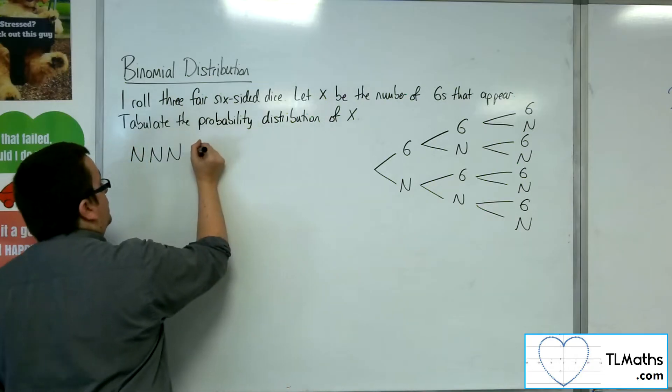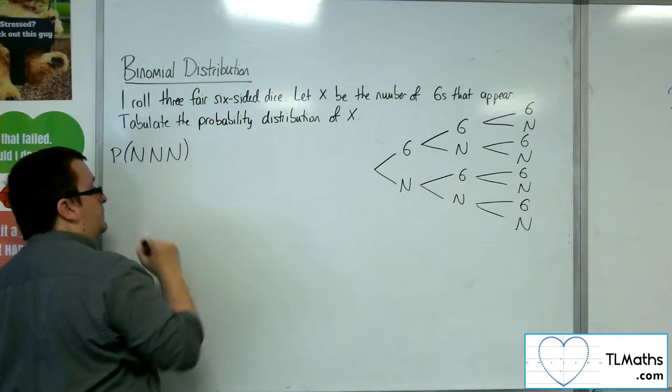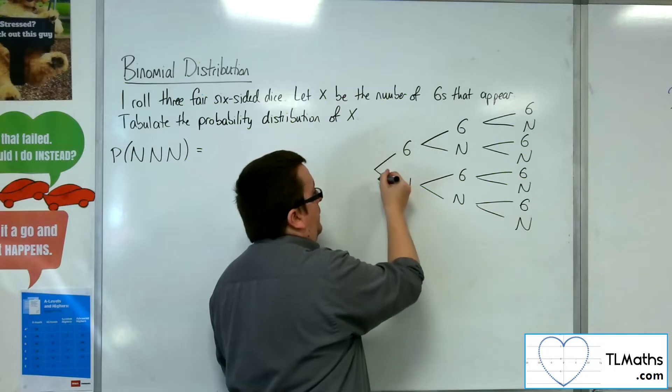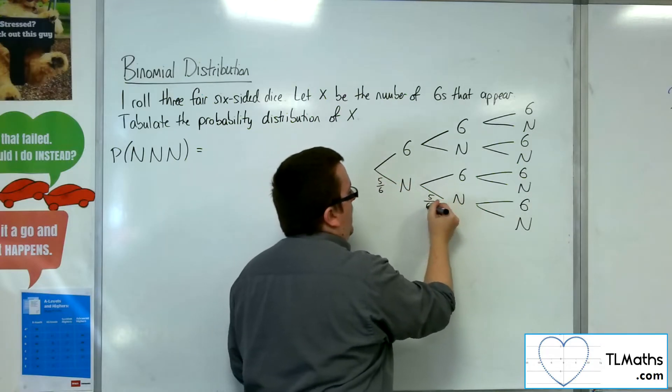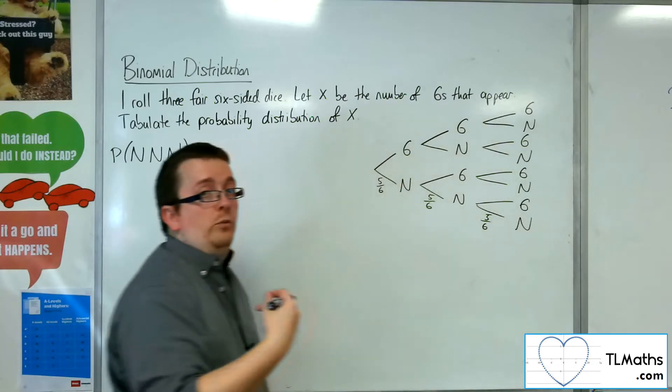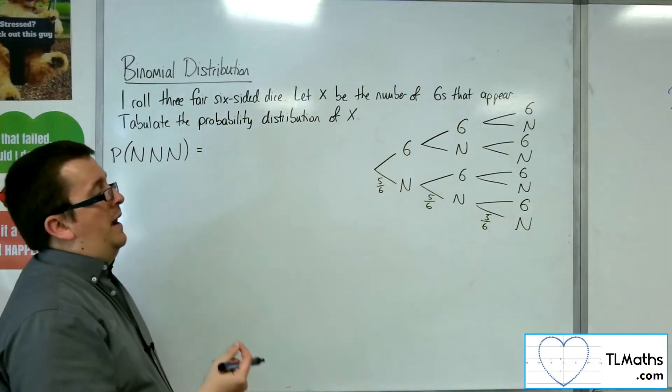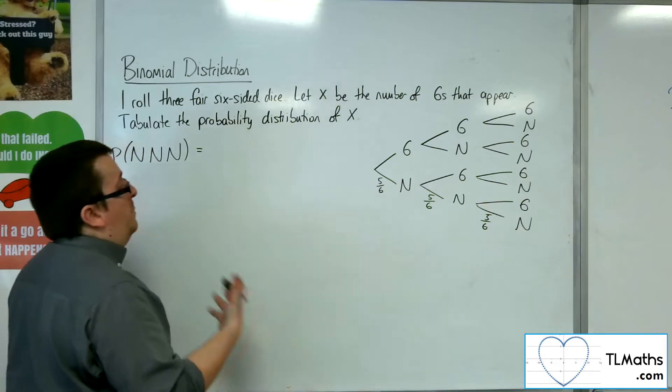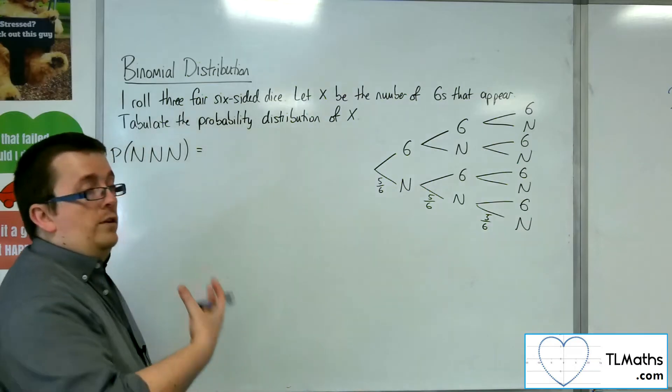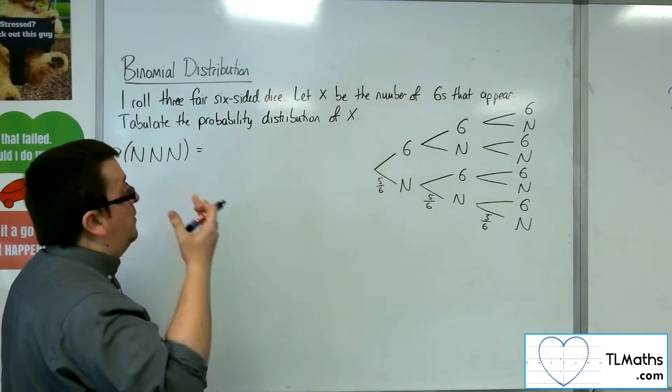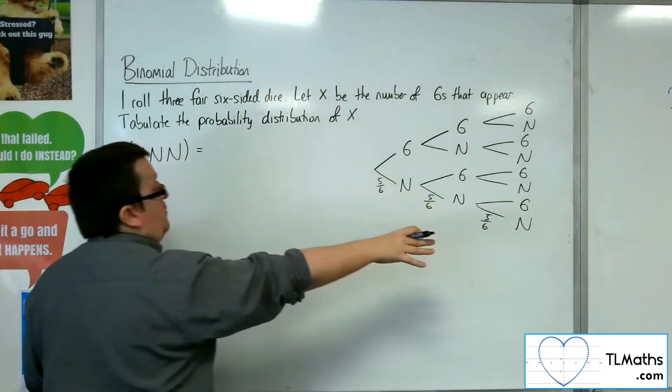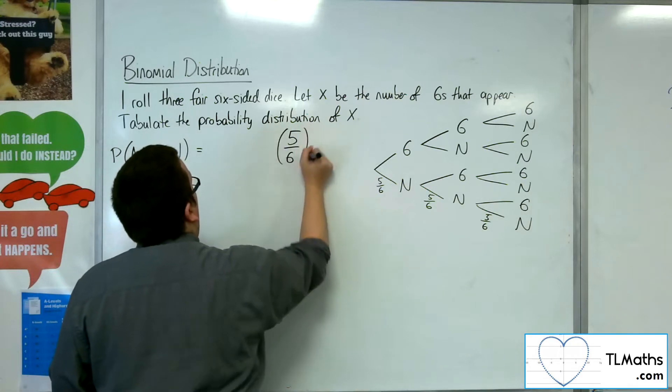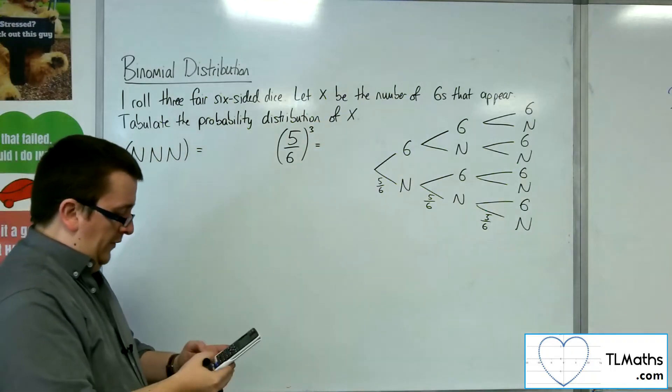And what that would be, so the probability of that occurring would be equal to, well, the probability of not getting a six is five-sixths. And it would carry on through because each of the rolls of the dice would be independent of the next. The probability will remain constant throughout. And so it would be five-sixths to the power of three. So five-sixths cubed.